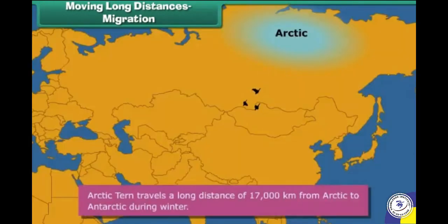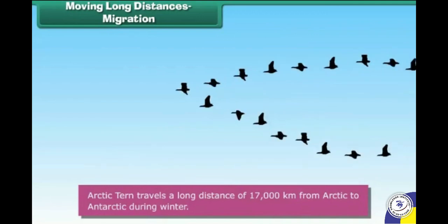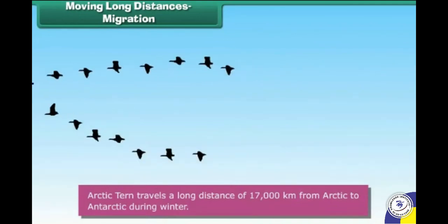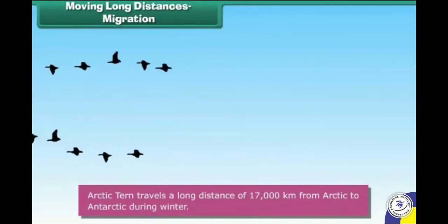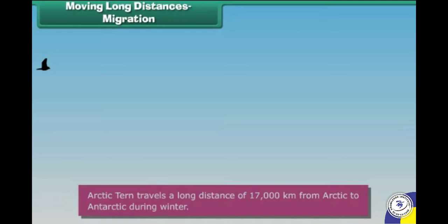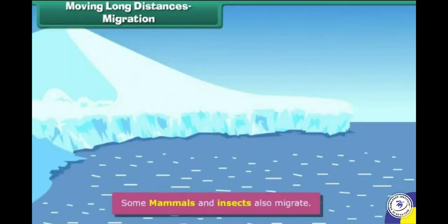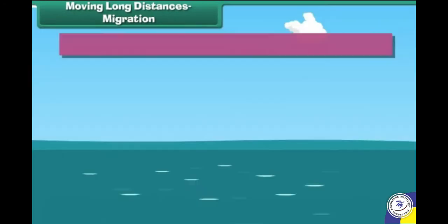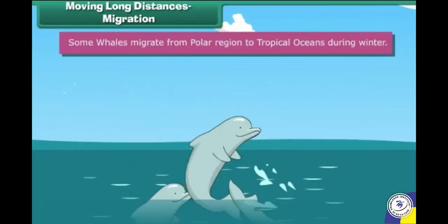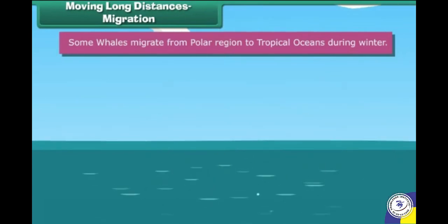The Arctic tern travels a long distance of 17,000 kilometers from the Arctic to the Antarctic during winter. Some mammals and insects also migrate. Some whales migrate from polar regions to tropical oceans and islands during winter.